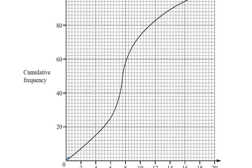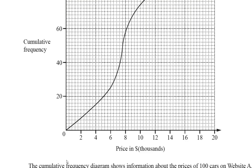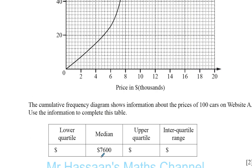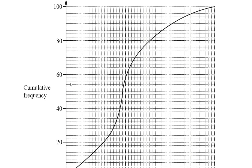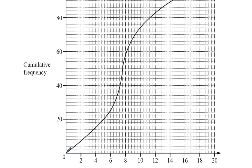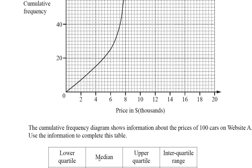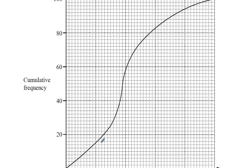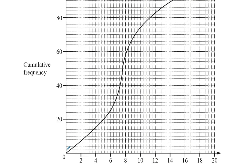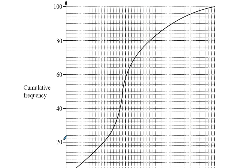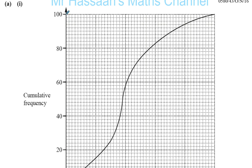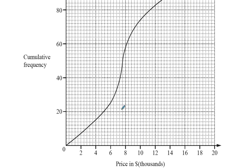The median is the value or entry which is right in the middle of the data. To find the median, you need to find out how many data items there are — that's what the cumulative frequency tells us. There are 100 items of data, and the median is the 50th percentile, the one right in the middle. So you go to 50 on the cumulative frequency curve, see where it hits the curve, and that tells you the value — which is what the x-axis tells you.